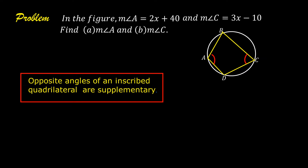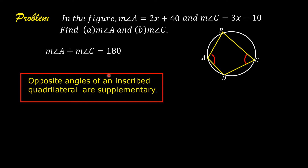Opposite angles of an inscribed quadrilateral are supplementary. Angle A and angle C are opposite angles in the inscribed quadrilateral ABCD. Therefore, they are supplementary and the sum of their measures is equal to 180. So, the measure of angle A plus the measure of angle C is equal to 180.